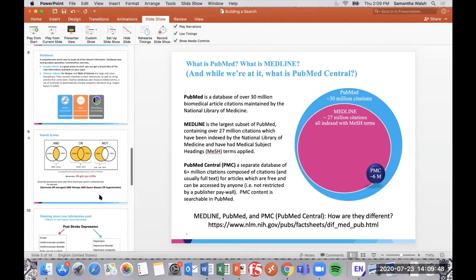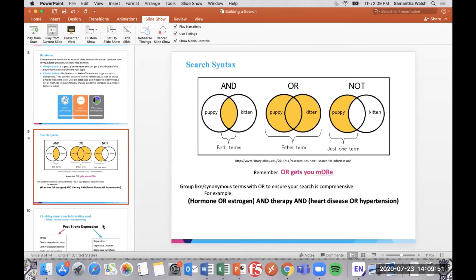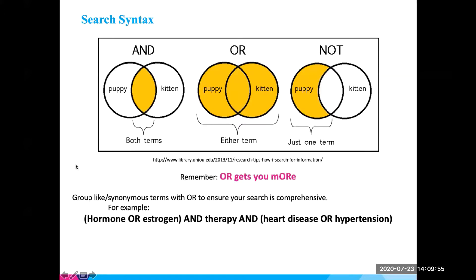Now we're going to think about search syntax — specifically how we're combining our terms. We're rarely searching for just one concept on its own. When we're really coming up with a literature review, we're typically looking for studies or literature that addresses a few topics together. The way we do that is by using Boolean operators. Using AND and OR to construct our searches can really help us come up with a targeted search strategy, as opposed to having to conduct multiple searches.